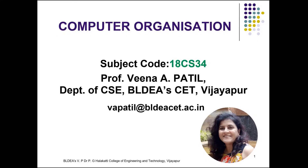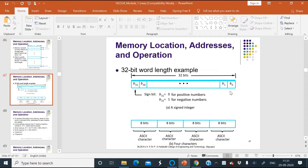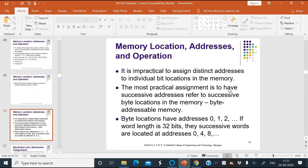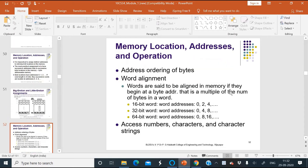Good morning students, welcome to computer organization class. This is Veena A. Patil from the Department of Computer Science, BLDA's CET Vijaypur. In the previous video we saw memory location addressing and operations — how memory addresses are given, how we can identify the size of memory, and big-endian and little-endian assignment. In big-endian, assignment starts from MSB to LSB, whereas in little-endian it starts from LSB to MSB.